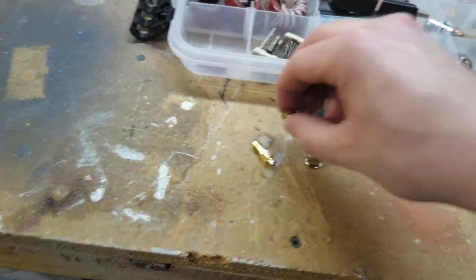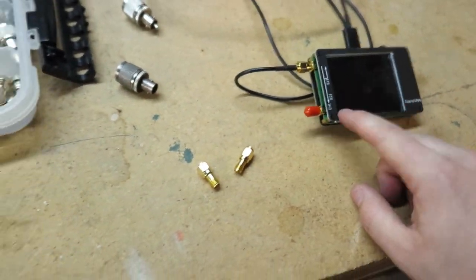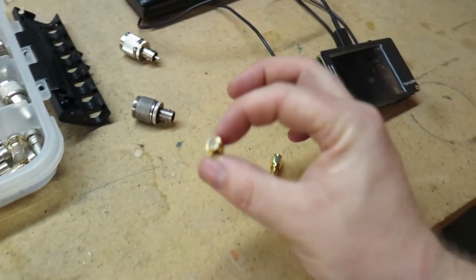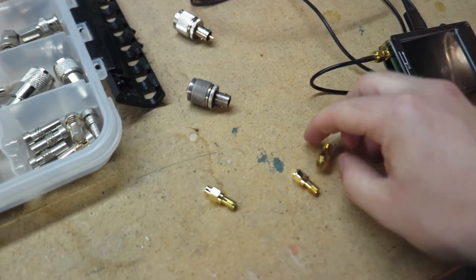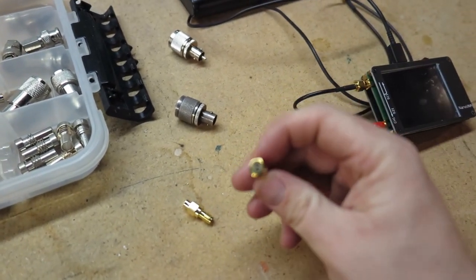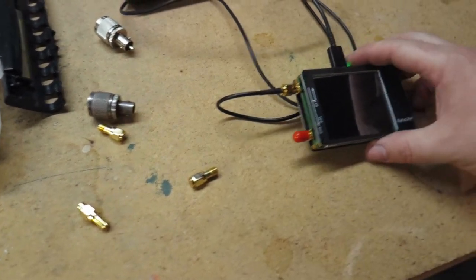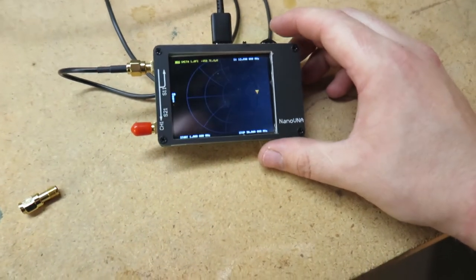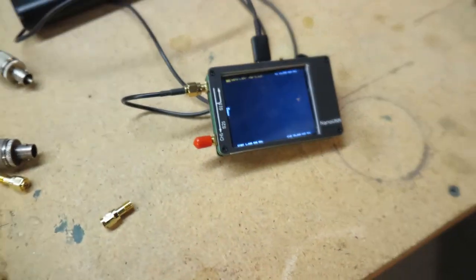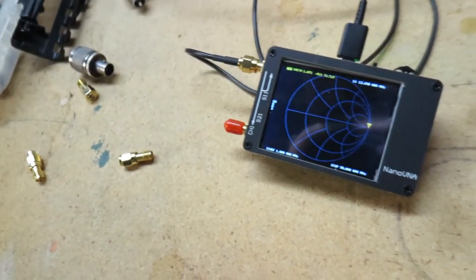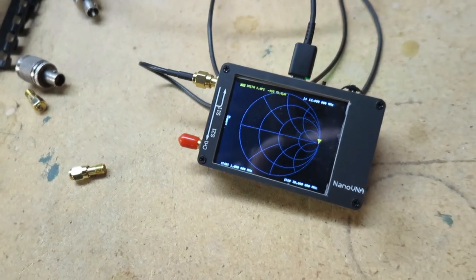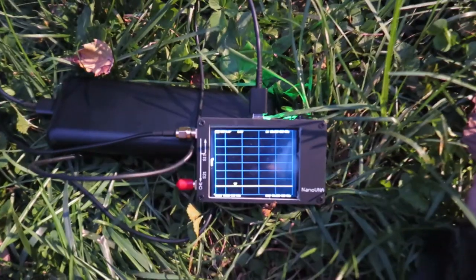Back out of the heat and away from the cicadas for a second in my basement. We now need to calibrate the nano VNA using the load, the short, and the open, otherwise called the SOL calibration standards. And luckily this thing has not exploded yet so I'm gonna do that real quick and we'll get back outside into the horrible heat and mosquitoes.